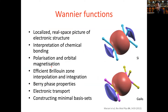You all know, hopefully, what Wannier functions are. They provide a localized, real-space picture of electronic structure and have increasingly become important in the analysis of materials and molecular systems — in terms of analyzing their electronic structure, interpreting chemical bonding, their deep connection to polarization and orbital magnetization. They can be used as an efficient minimal basis set for constructing tight-binding models, calculating electronic transport, and in recent years in topological phase properties as well.